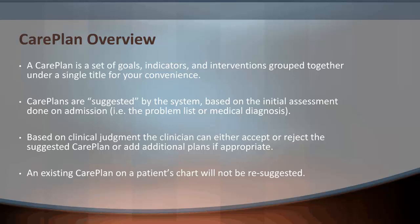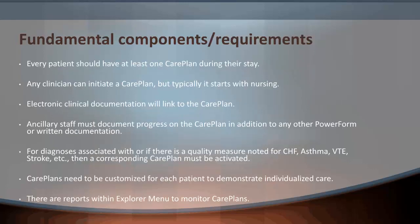Based on clinical judgment, the clinician can either accept or reject a suggested care plan, or add additional plans if appropriate. An existing care plan on a patient's chart will not be re-suggested. There are fundamental requirements for every care plan. Every patient should have at least one care plan during their stay. Any clinician can initiate a care plan, but it typically starts with nursing. Electronic clinical documentation will link to the care plan. Ancillary staff must document progress on the care plan in addition to any other power form or written documentation.